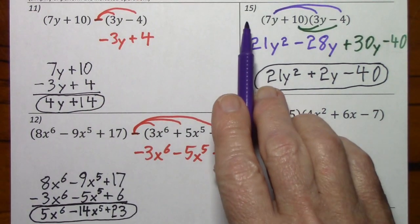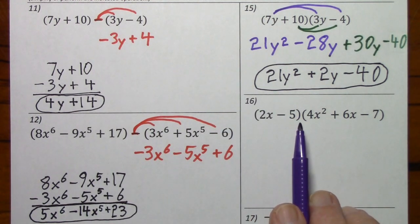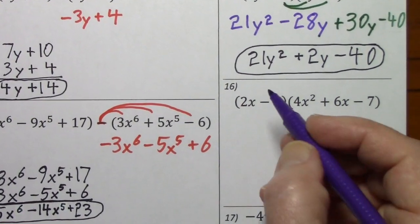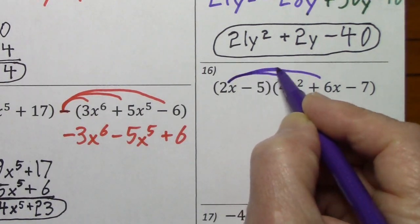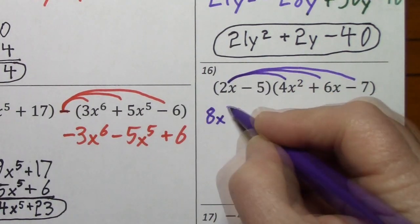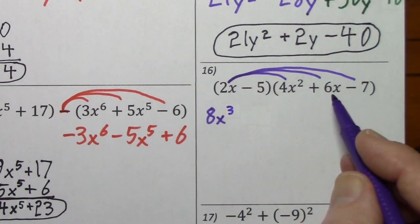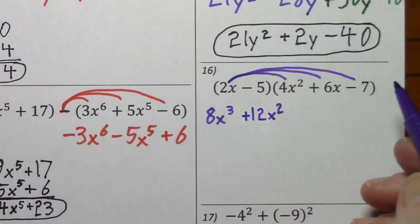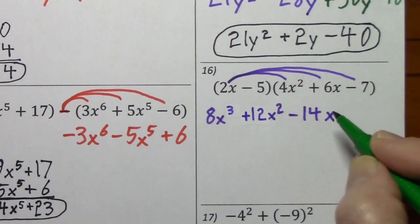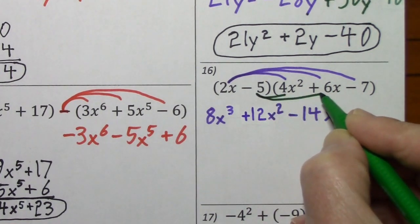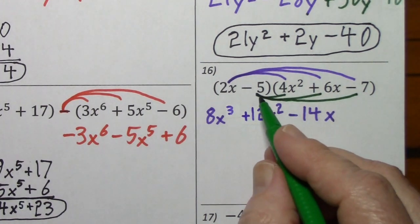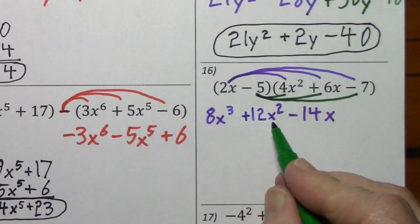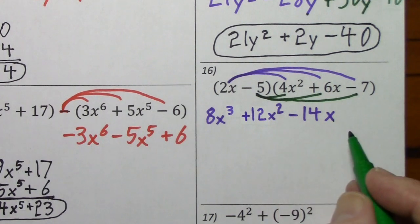And 16 is similar to 15 in that you have multiplication — it's just that each term here is going to have to hit each of the three terms. Negative 5 will have to hit each term: negative 5 times 4x squared gives us negative 20x squared. I'm going to put that under the x squared term so it's easier to keep track of like terms.